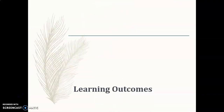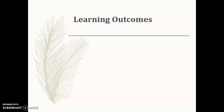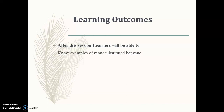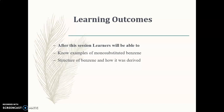What are the different learning outcomes after this session? After this session, learners will be able to know the examples of monosubstituted benzene, the structure of benzene and how it is derived, and also what is the difference between aliphatic compounds and aromatic compounds.